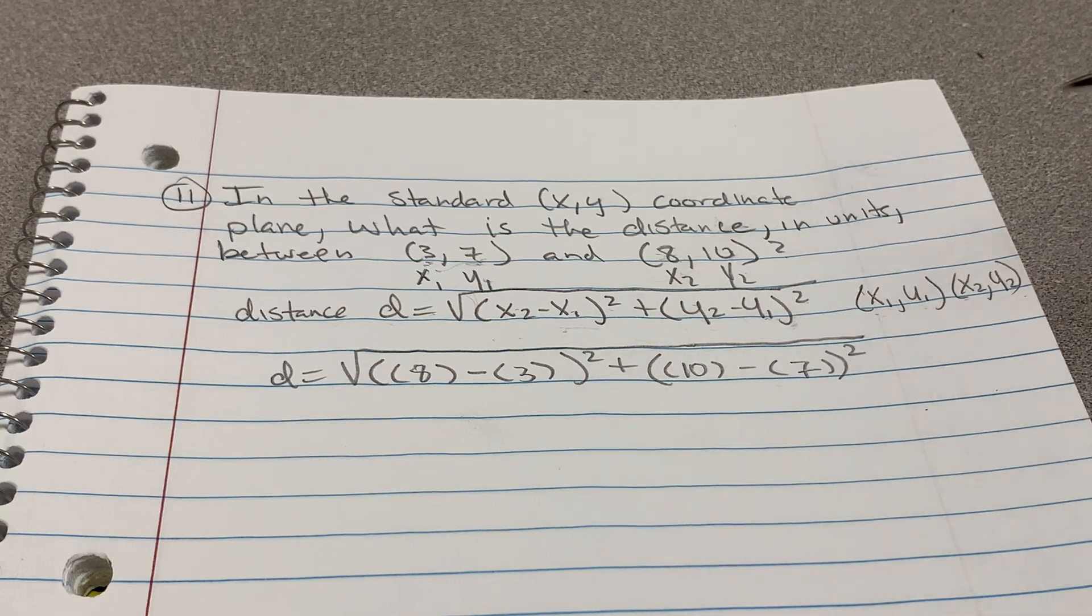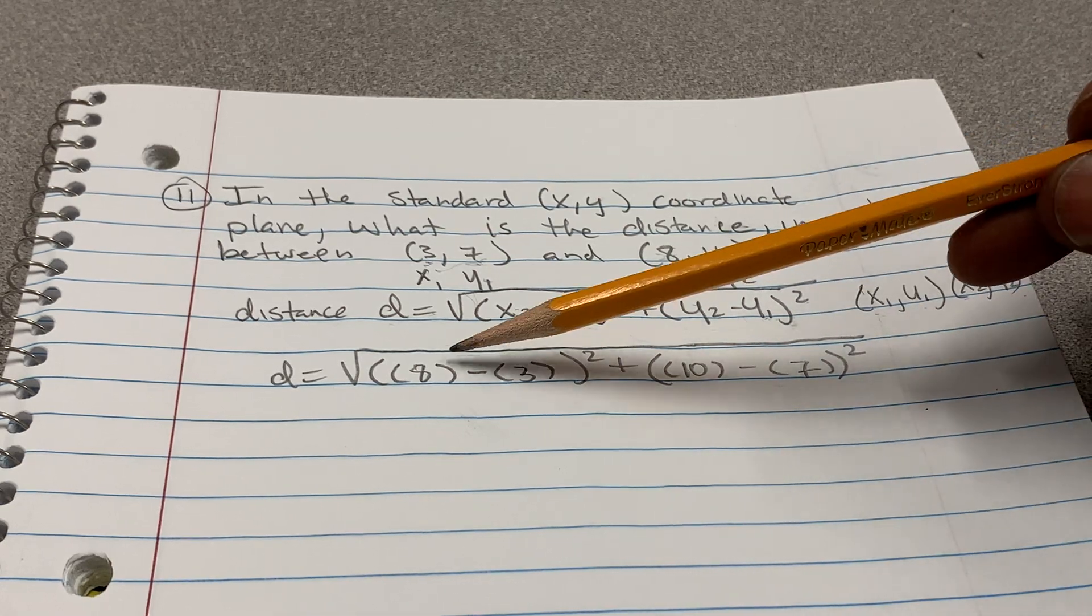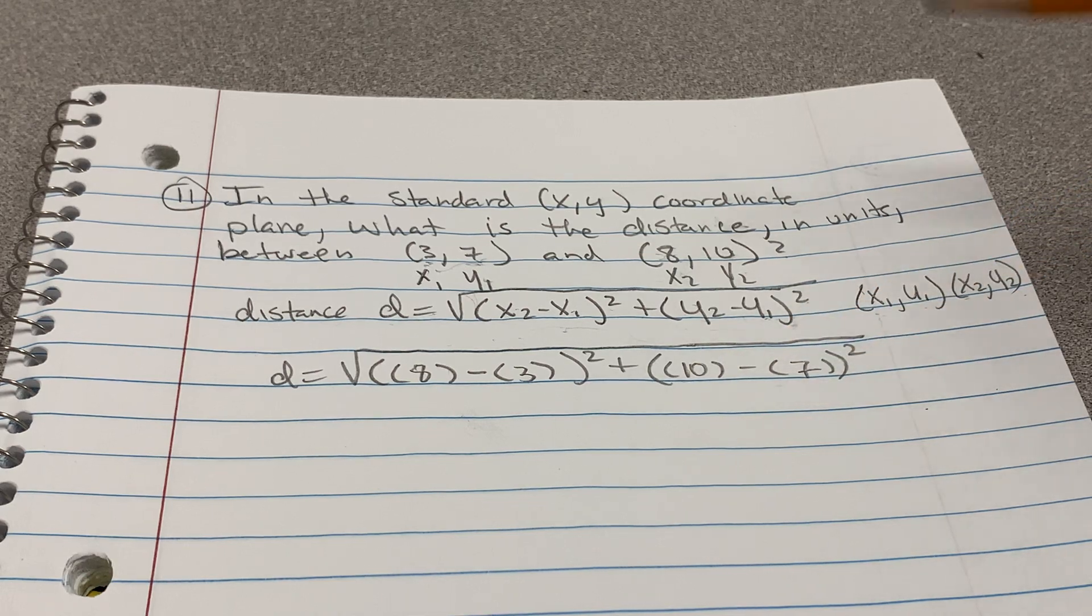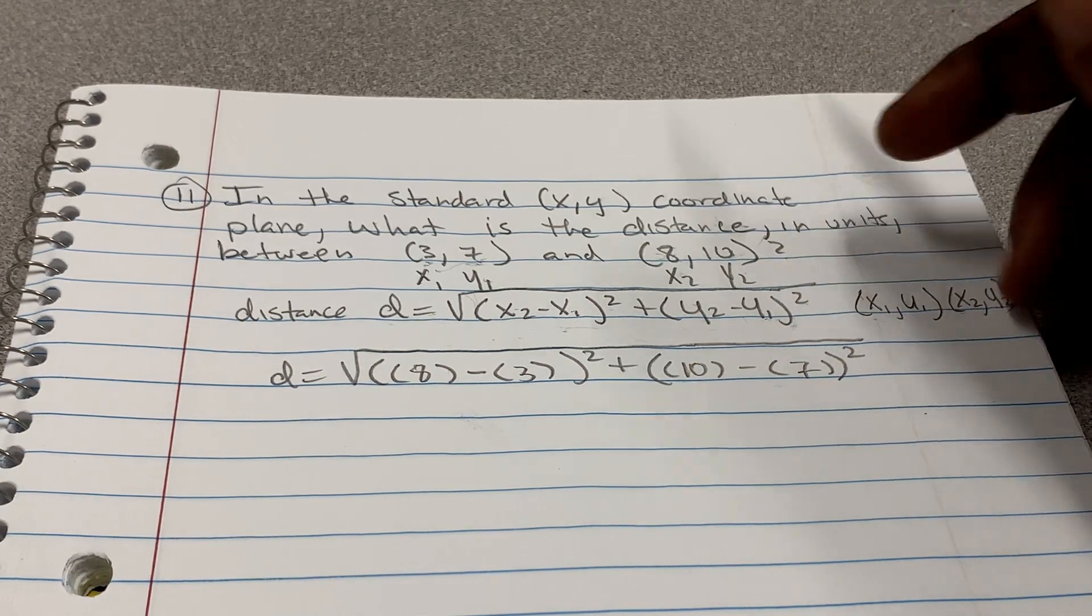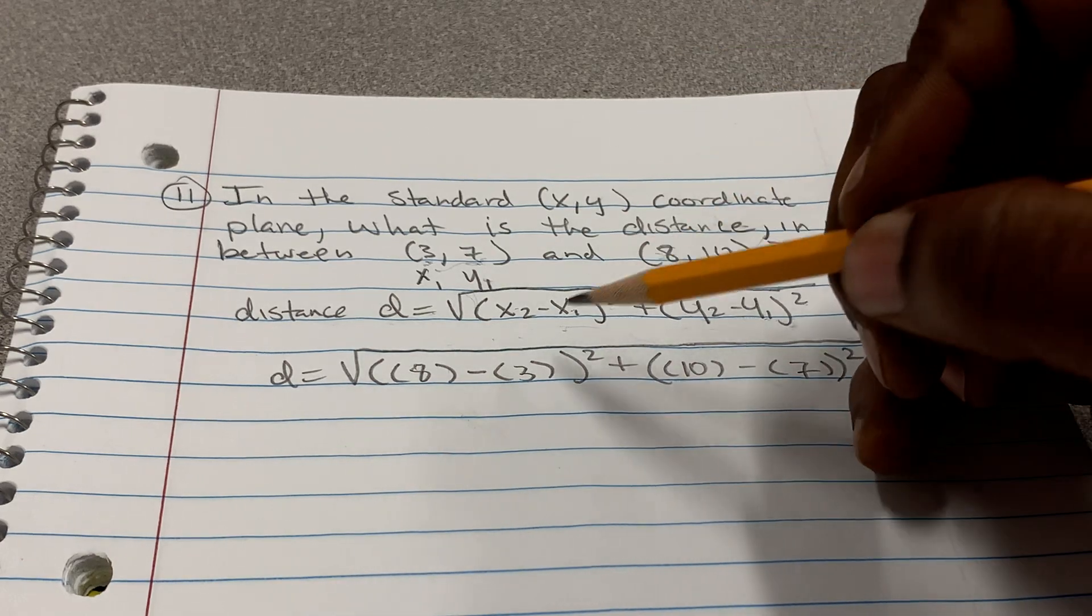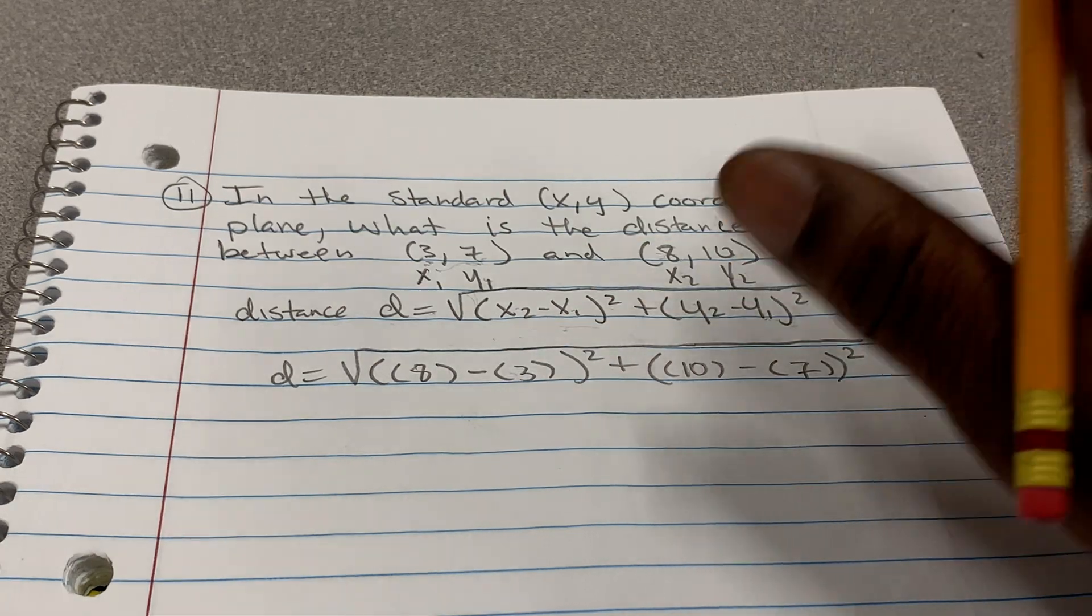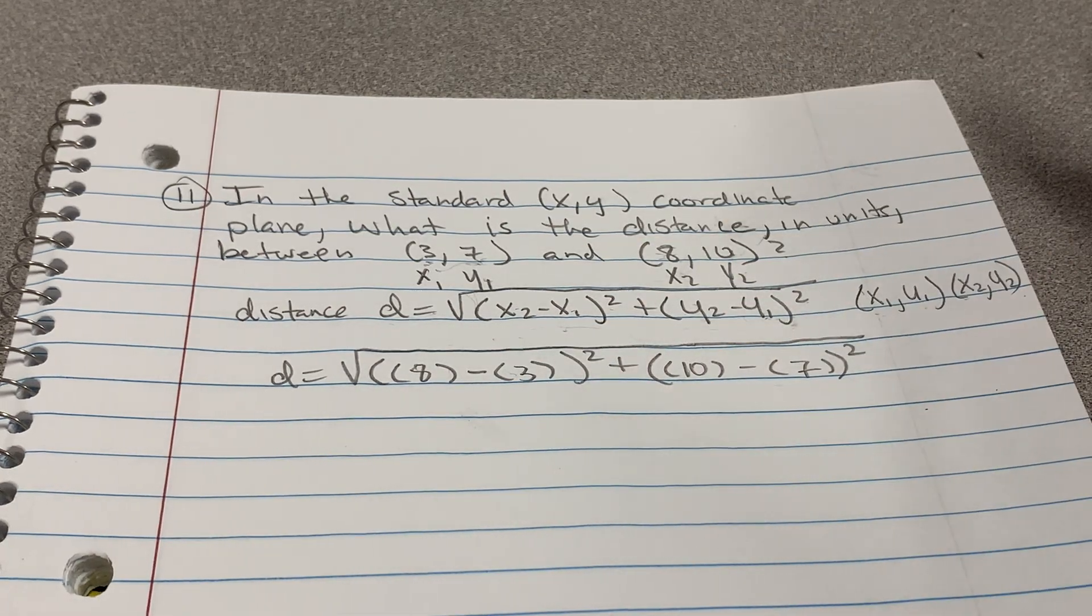Now, from here, once we put those numbers in, I like to put the parentheses just so we don't make mistakes on signs. Because on certain questions, some of these coordinates may be negative. For instance, if this 3 was a negative 3, then we would have to be adding here. I just want to make that known for a special case.